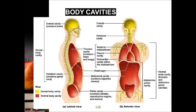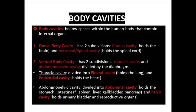Next, terminologies for body cavities. From the image, yellow represents the dorsal or posterior body cavity, and red represents the ventral or anterior body cavity. There are some more cavities within each dorsal and ventral body cavity. I will explain the terminologies in each cavity.